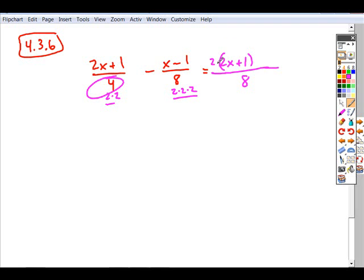One of the twos. Minus the next fraction's numerator, x minus one, times what LCD factor is missing from its denominator? It's not missing anything.